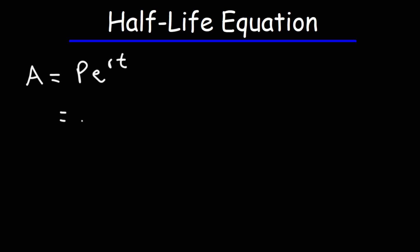We can replace P with A initial, and replace A with A final, because that's the final amount. Since we're dealing with chemistry, we can replace R with the rate constant K. When dealing with half-life problems, you're dealing with exponential decay as opposed to exponential growth. So we're going to have a negative sign in front of K, since we're dealing with exponential decay, and we can keep T the same. This is one equation that you want to be familiar with.